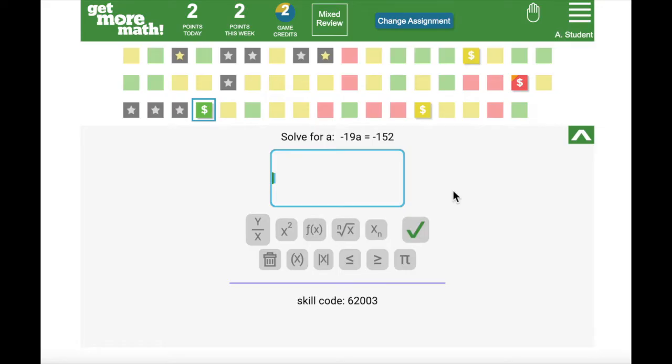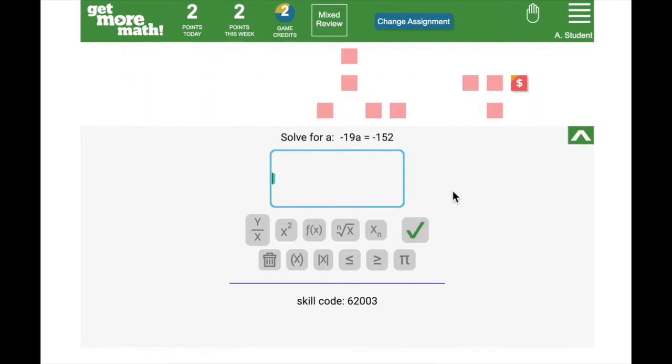As you continue to practice and get problems correct, your skills will go up levels. We use colors to indicate different levels of mastery. As a reminder, all new skills will start out as red. On the first day of practicing a skill you can see red squares level up to yellow.